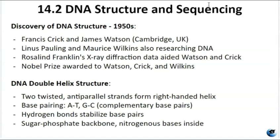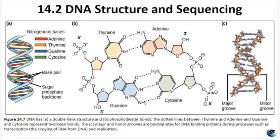The two strands are anti-parallel, and the sugar-phosphate backbones form the outer structure, while the nitrogenous bases stack inward like rungs on a ladder. The uniform diameter of the helix stays the same because of complementary base pairing — A to T, C to G. In figure 14.7, the double helix structure is shown on the left, with a close-up showing the phosphodiester bonds and hydrogen bonds in the middle. Only purines pair with pyrimidines, which is how it stays the same width.